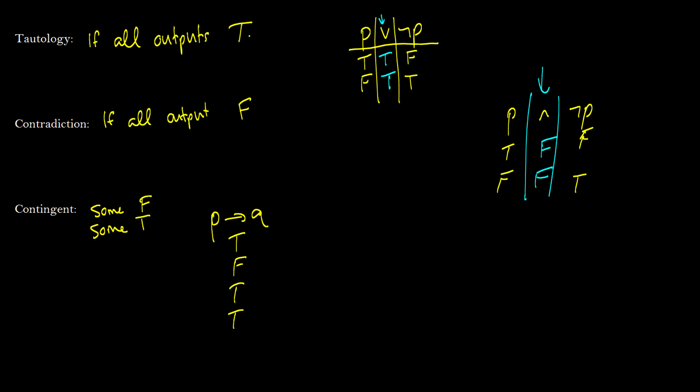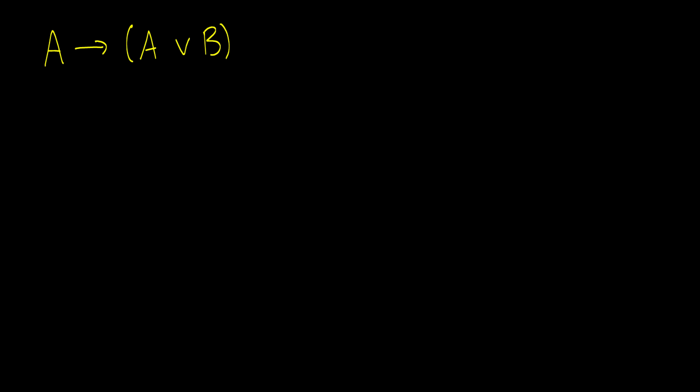So we're going to take a look at a couple things, and here's an example A arrow A or B. Now my question to you is not is this contingency tautology or contradiction, but I want to ask you specifically is this a tautology? So a reminder a tautology says that all outputs are true. So what we can do is instead of having to draw a whole truth table, why don't we just say, well let's just suppose the sentence is false.